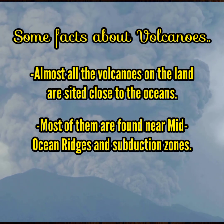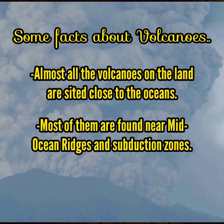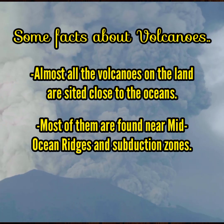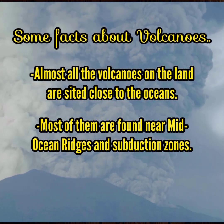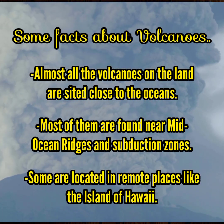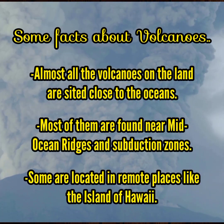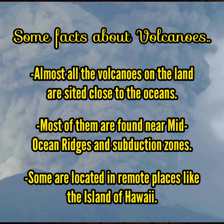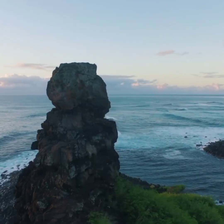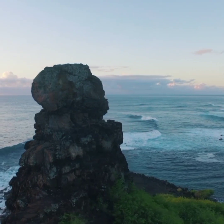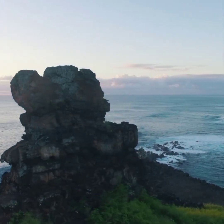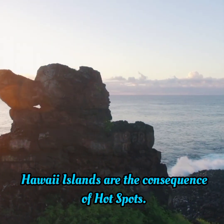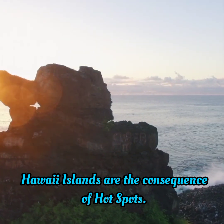This explains why the map of volcanoes on Earth matches so well with the map of tectonic plates. On the other hand, some volcanoes are located in remote places, like in the middle of the Pacific Plate — such as Hawaii — thousands of kilometers away from the nearest plate boundary. This kind of volcano is very special. It is the consequence of a hot spot.